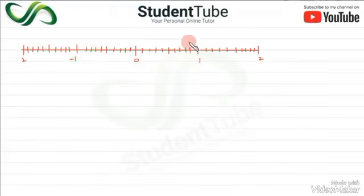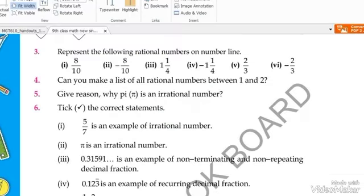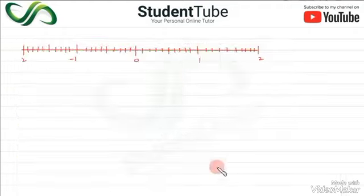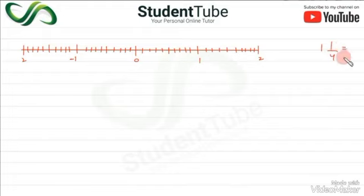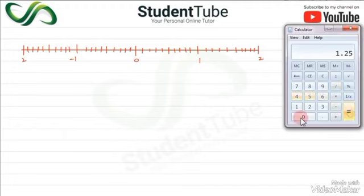Next example: represent 8/10 and -8/10 on the number line. Draw a line with center at zero and divide it into ten equal points. Calculate 8/10, which equals 0.8. Mark this point on the right. For -8/10, mark the corresponding point on the left side.